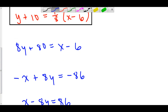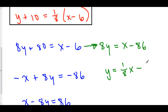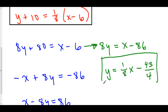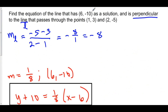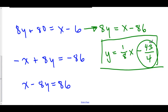We can also find the equation of this line in slope-intercept form. Here we can solve for y: we subtract 80, so 8y is equal to x minus 86. Then we divide everything by eight, so y is equal to one over eight x minus 86 over 8, which reduces to 43 over 4. So here is the equation in slope-intercept form. If they had asked for the y-intercept, we could put it into point-slope form and then convert that into slope-intercept form — and there's our y-intercept.